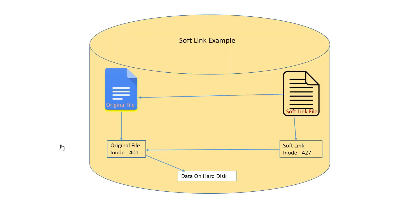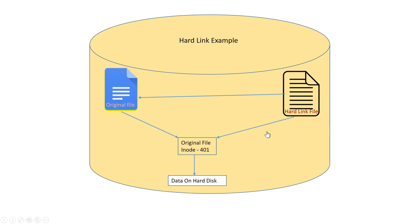Here is a deeper explanation with a diagram. In a soft link example: you have an original file with inode value 401, then you create a soft link pointing to the original file, and the soft link has a different inode value — say 427. The actual data is stored on the hard disk via the original file, not the soft link. The soft link also points to the data on the hard disk, but it has no meaning if the original file is deleted.